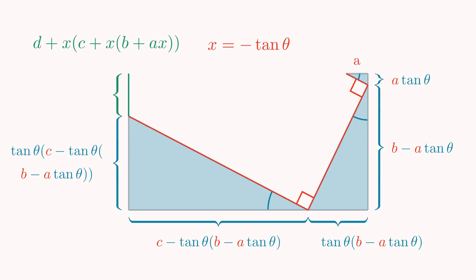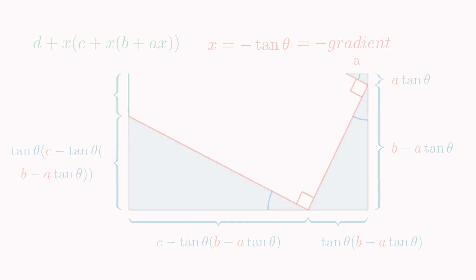Let's analyse what this negative tan theta really means, though. The tangent of an angle is the ratio of the opposite side to the adjacent, which in the case of the small triangle is the negative change in y over change in x. In other words, the negative of the gradient. And that's Lill's method, a beautiful crossover between algebra and geometry.